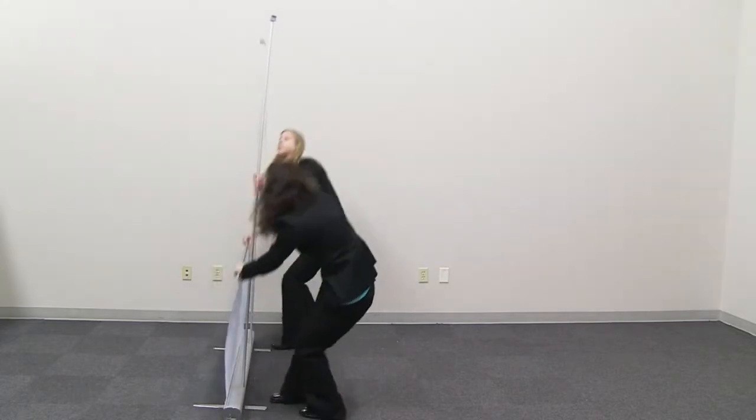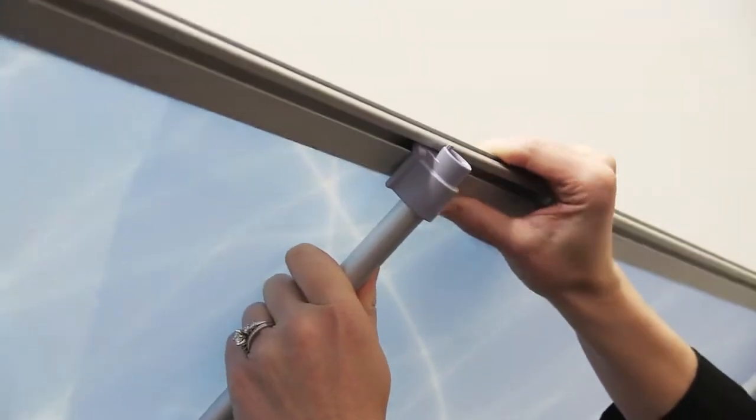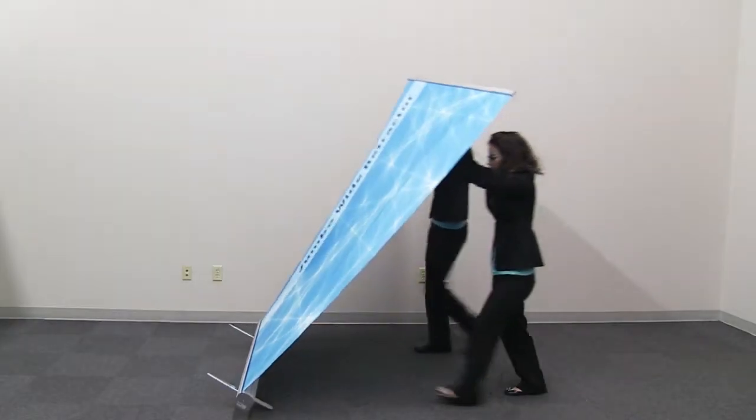In tandem with another person, lean display back and gently pull up the banner rail. Insert banner rail onto the poles' grooves.